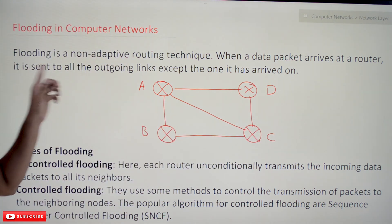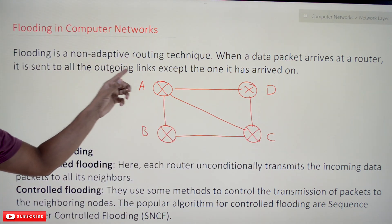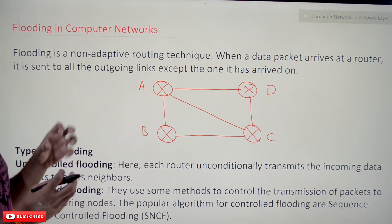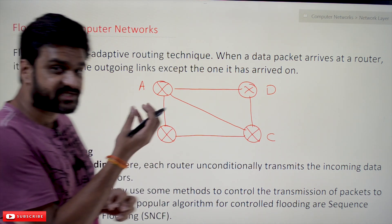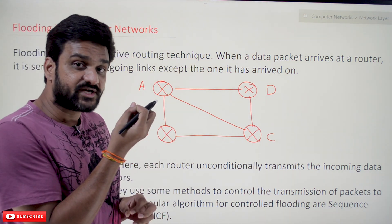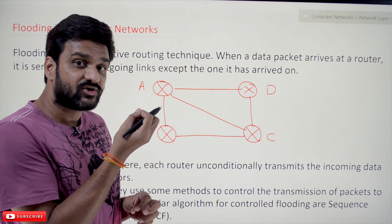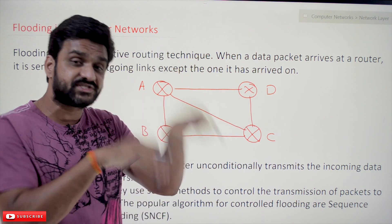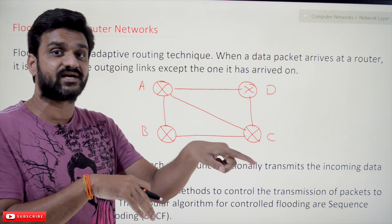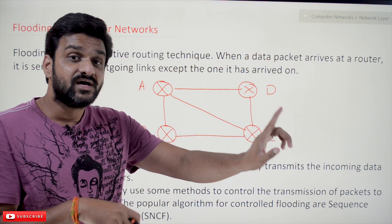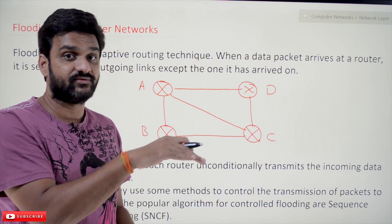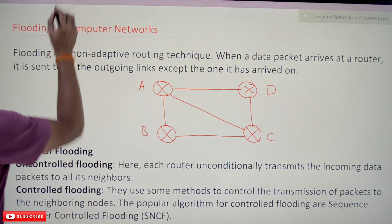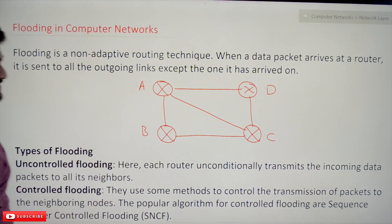When a data packet arrives at the router, it is sent to all the outgoing links except the one it arrived on. So whenever a data packet is received by a router, that packet will be transmitted through all the interfaces to which that router is directly connected, other than the link through which the packet arrived.